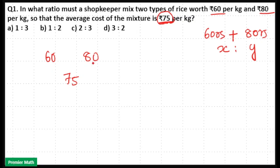This is LHS, this is RHS. If you want to find out the ratio, take the LHS side and the middle number, that is 60 and 75, and subtract between them.